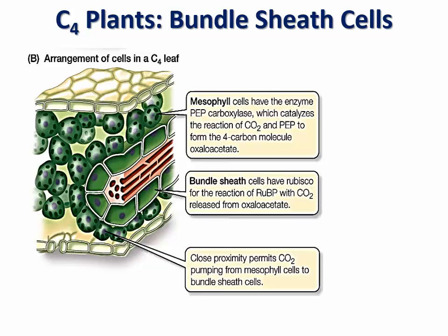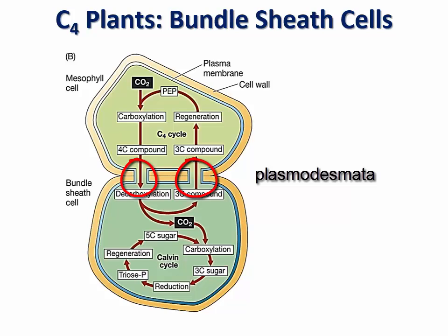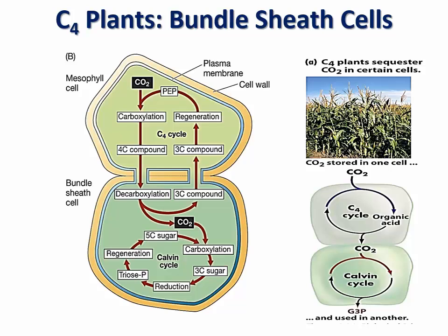Many of the mesophyll cells are in close proximity to the bundle sheath cells and are connected to each other by plasmodesmata. On hot or dry days, stomata remain partially closed. Since PEP carboxylase is not affected by the buildup of oxygen inside the leaf, it keeps fixing CO2, resulting in the accumulation of oxaloacetate in the mesophyll cells. Oxaloacetate diffuses into the bundle sheath cells where it is decarboxylated — meaning CO2 is removed from oxaloacetate — thus regenerating phosphoenolpyruvate. This causes the level of CO2 to remain high in bundle sheath cells where Rubisco is located. In C4 plants, carbon dioxide is fixed and stored in mesophyll cells, while the Calvin cycle occurs in the bundle sheath cells, thus keeping photorespiration negligible.